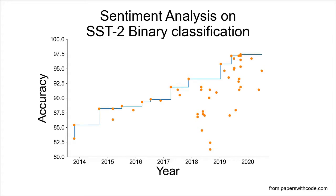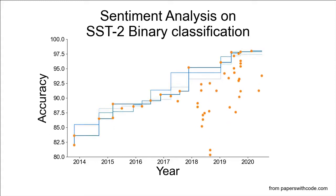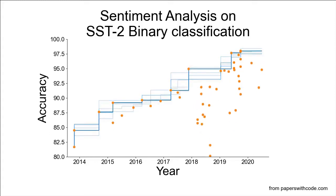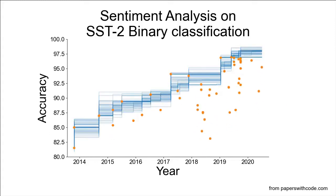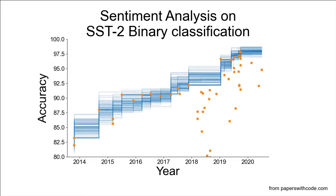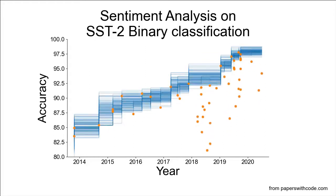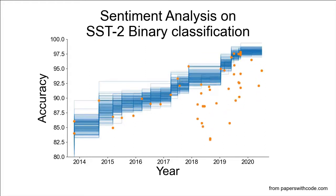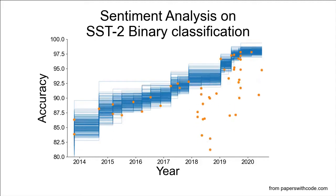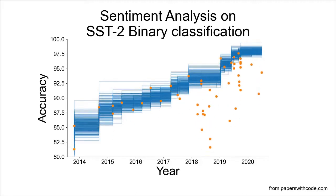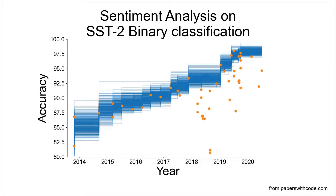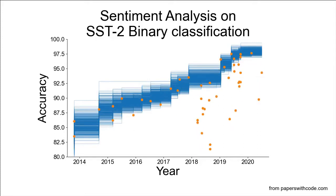If we change the relevant parts of the experiments, such as the weight initialization or the ordering of the data, will the rankings change? Will we witness different methods establishing the state-of-the-art? Measuring the performance of learning algorithms is a noisy process. In this work, we investigated three questions to help improve the methodology used to infer new state-of-the-arts.